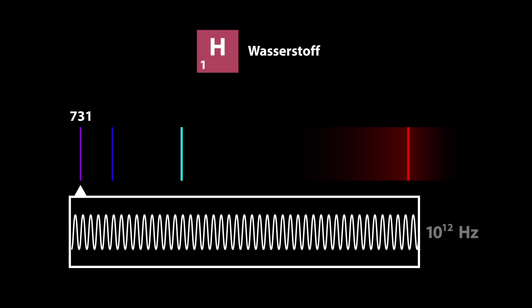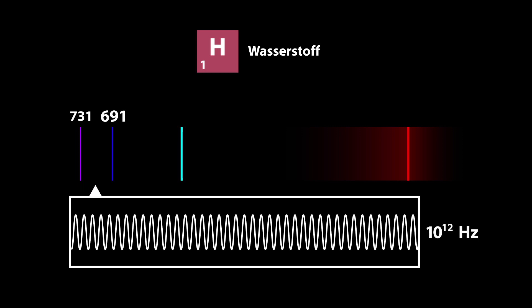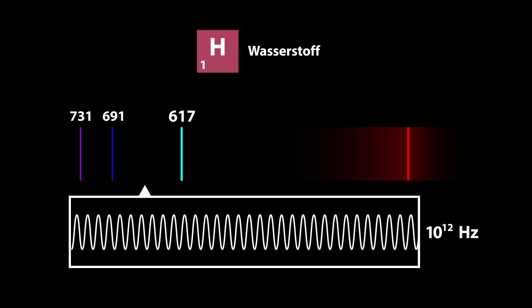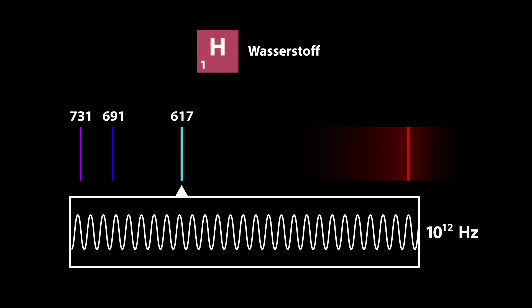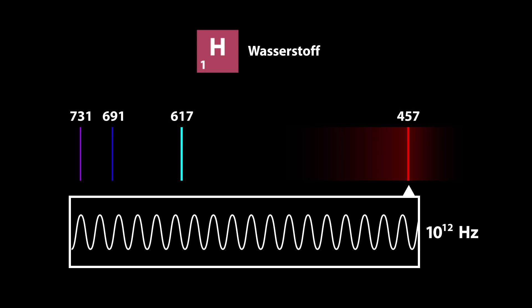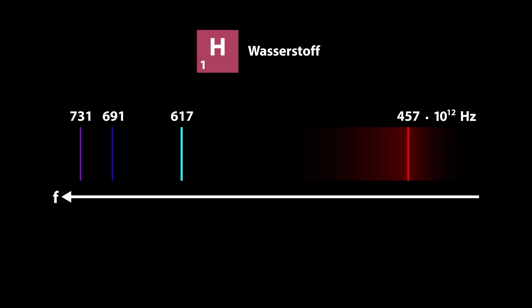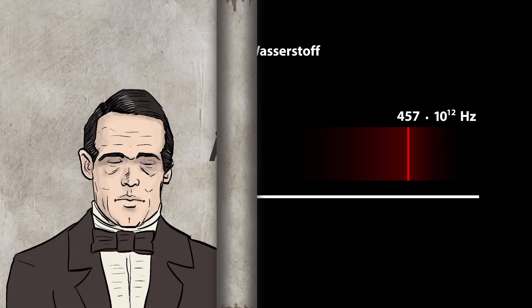Namely 731, 691, 617, and 457 times 10 to the power of 12 Hz. Anders Jonas Angstrom measured this as early as 1862.